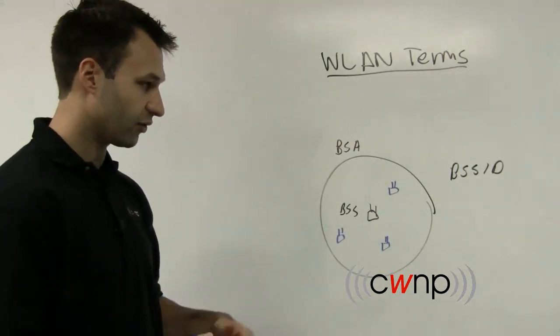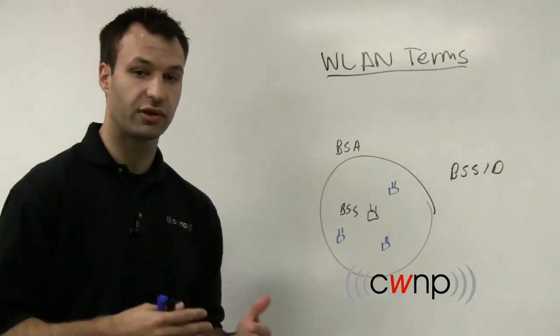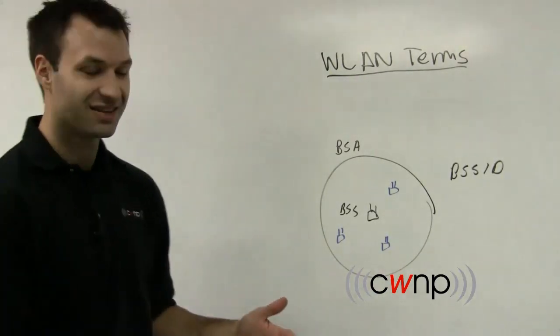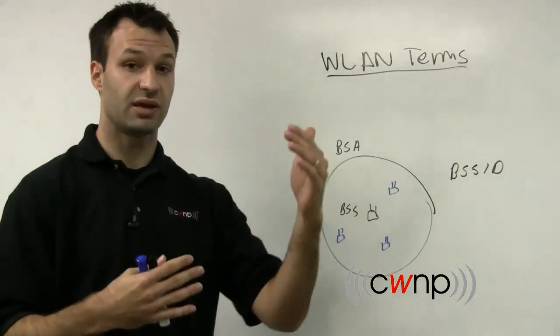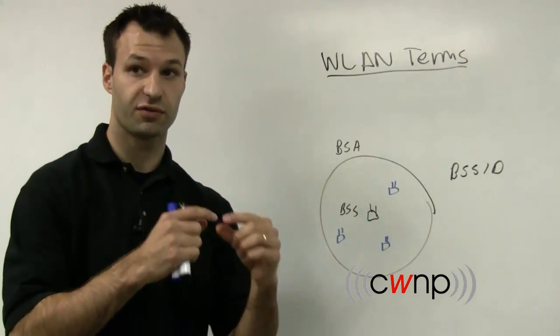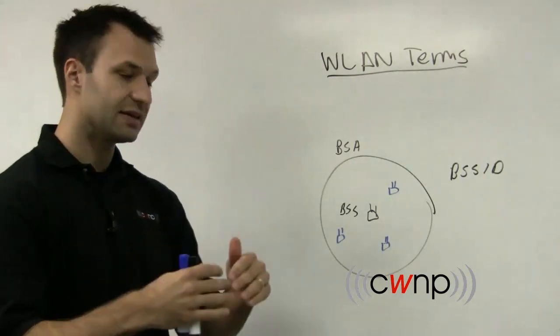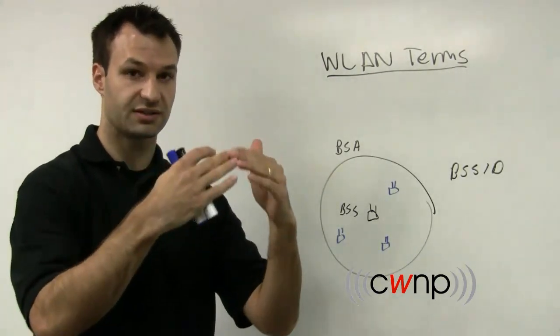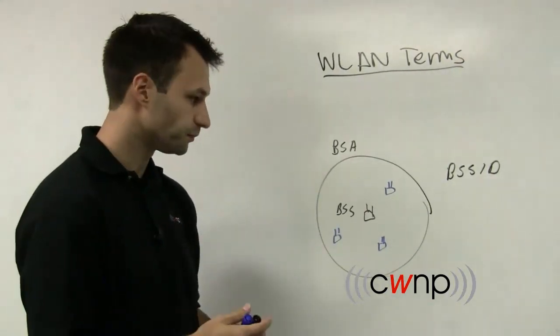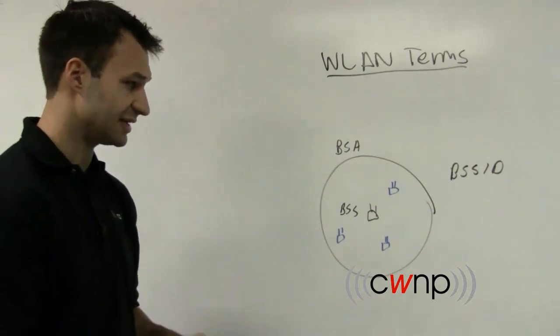Now when the access point serves multiple basic service sets, the BSS ID needs different BSS IDs for each service set. So it's going to take this base MAC address for the first BSS, and then each additional BSS is going to get its own BSS ID. It's basically just going to increment the MAC address by one. So that's what a BSS ID is.